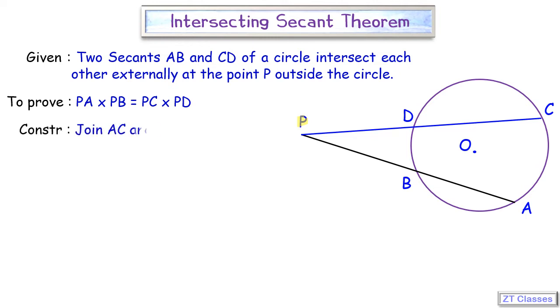That is to join AC and BD. Now here two triangles are getting formed. One triangle is your triangle PBD, another triangle is your triangle PAC. So let's take these two triangles here.